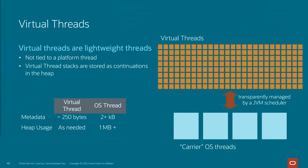Virtual threads are assigned by the VM to a carrier OS thread only for as long as they need the CPU. When the thread waits, the JVM will pause it, unmount it, and assign the carrier OS thread to some other virtual thread that is ready for CPU work. Later, whenever the first virtual thread needs the CPU again, the JVM will assign it to whatever OS thread happens to be available — it could be the same one or a different one, and nobody cares.